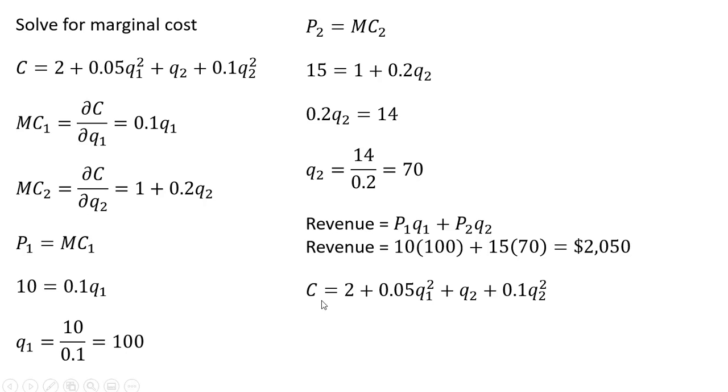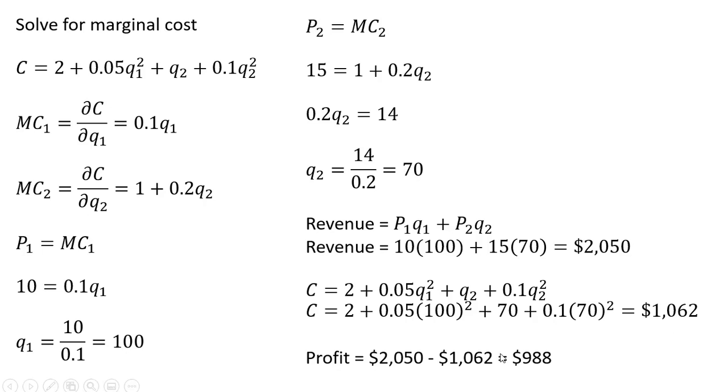And to get total cost, here's our cost equation. We're going to plug in 100 for Q subscript 1 and 70 for Q subscript 2, which appears in two places. Making those substitutions and simplifying, we get the total cost. And profit is total revenue minus total cost. So $2,050 minus $1,062, we get the firm's total profit.